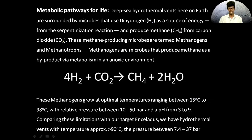Metabolic pathway for life: deep sea hydrothermal vents here on Earth are surrounded by microbes that use hydrogen as a source of energy and produce methane from carbon dioxide. These microbes are termed as methanogens. They thrive in an optimal temperature range between 15 to 90 degrees, with pressure between 10 to 50 bar and a pH from 3 to 9.